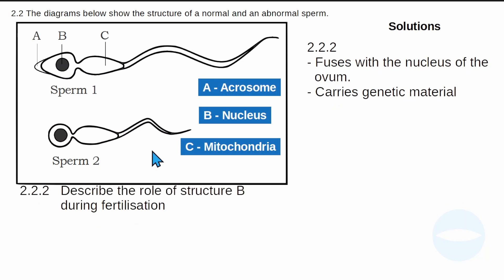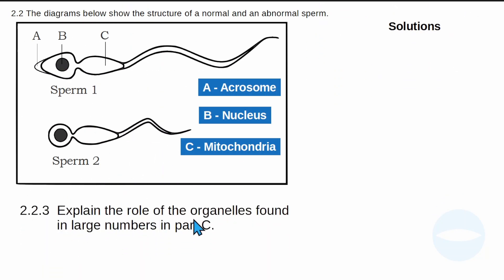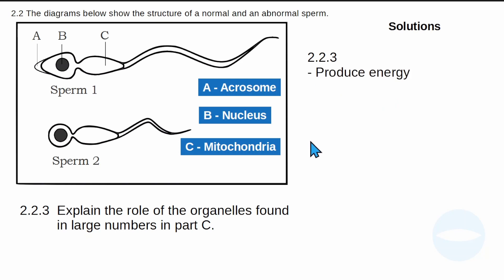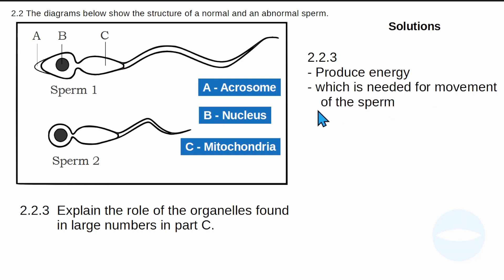The next question asks to explain the role of the organelles found in large numbers in part C. The organelles in part C are mitochondria. The mitochondria produce energy through respiration. This energy is used for the movement of the sperm — it enables the sperm to move towards the ovum.